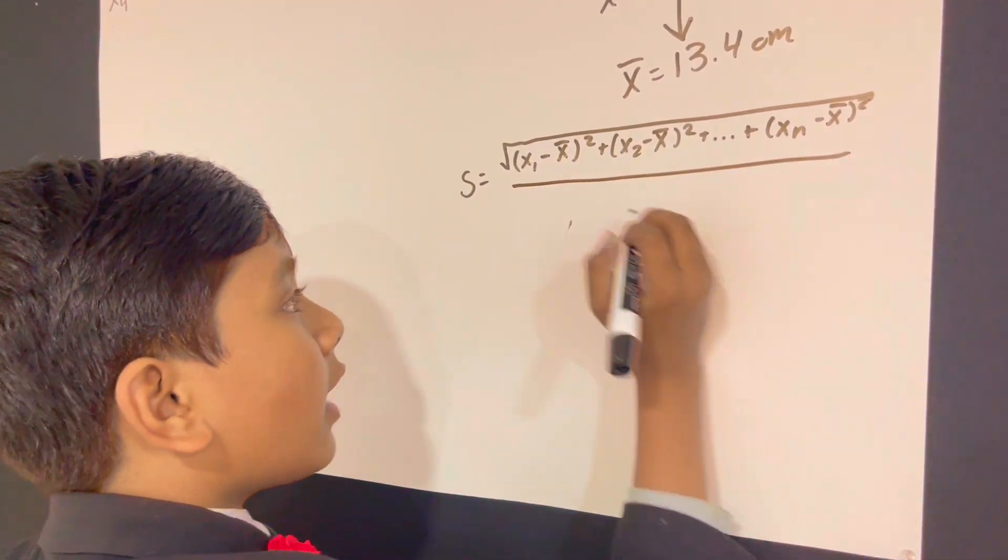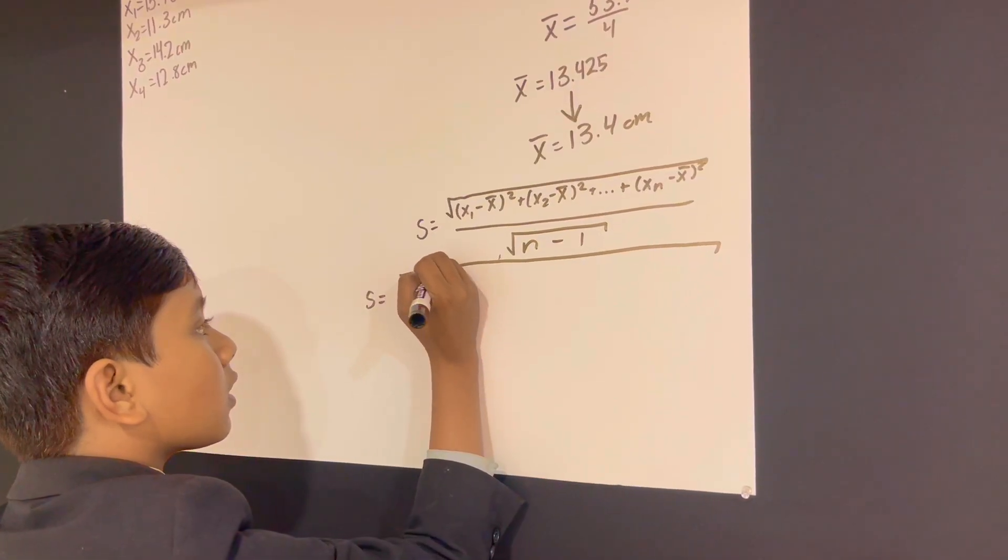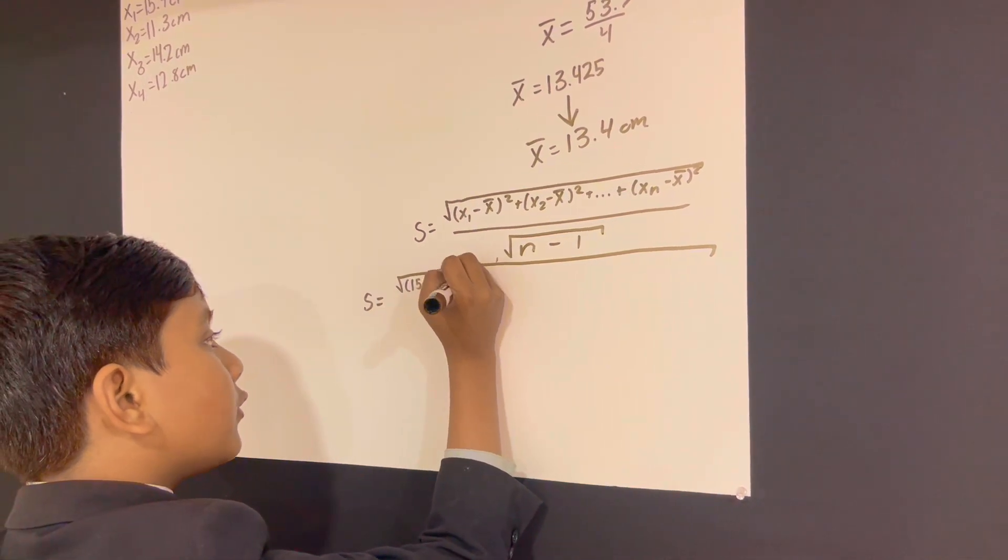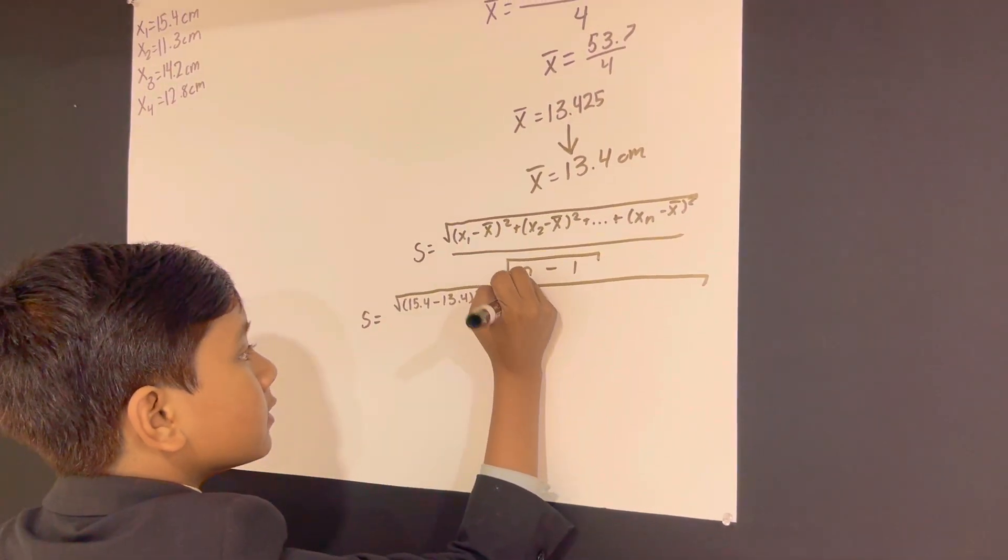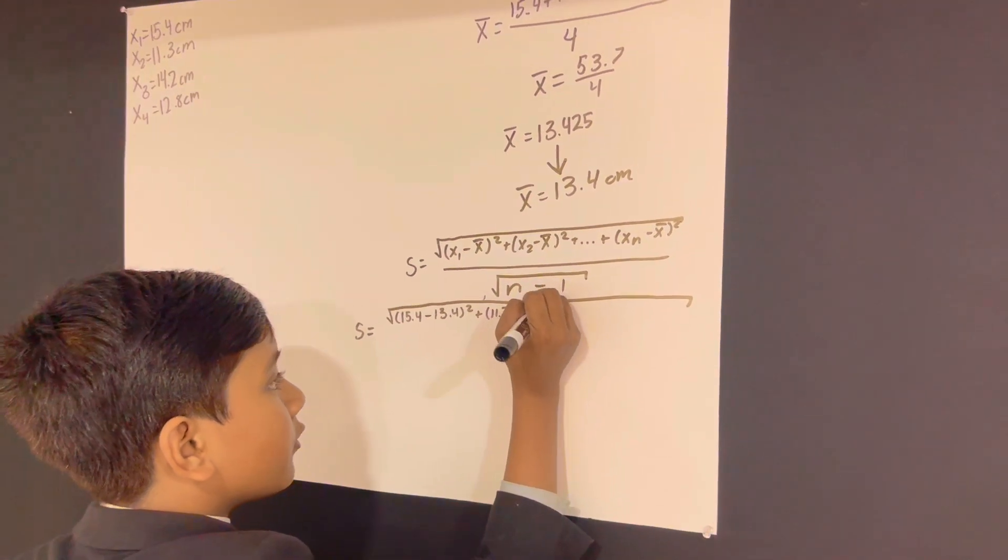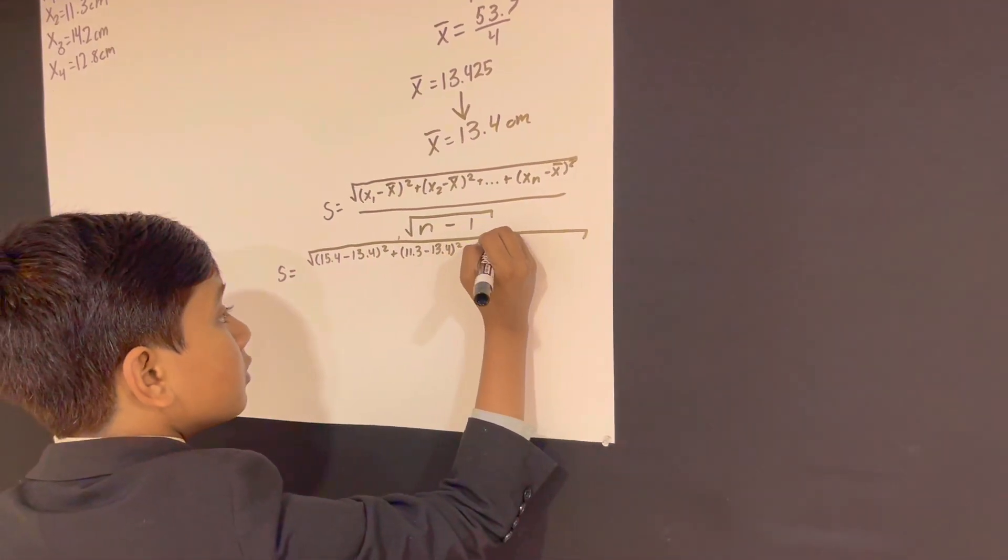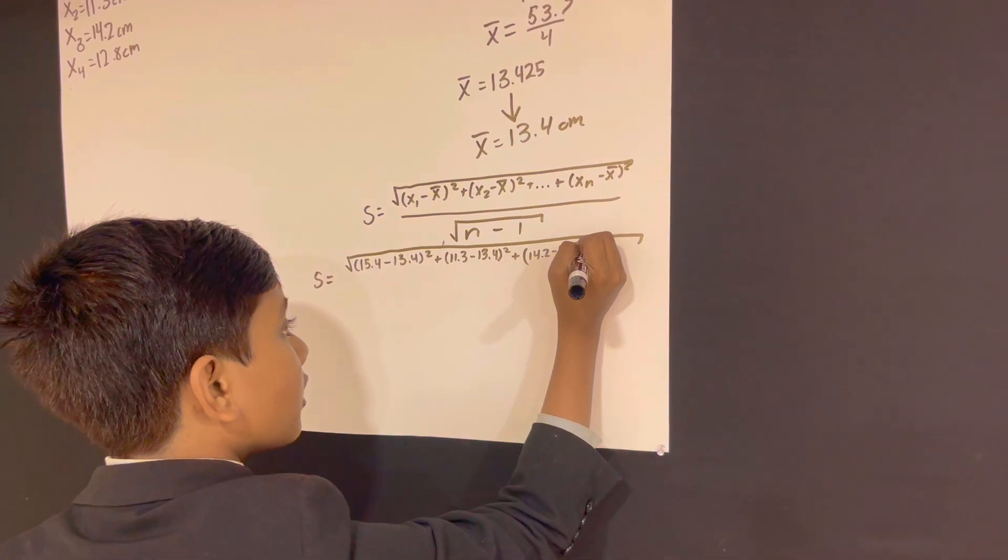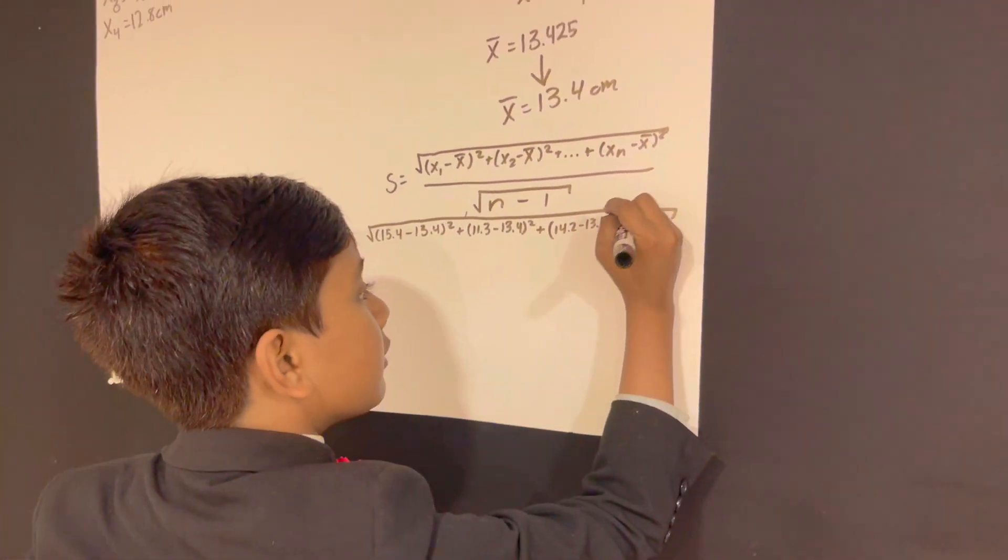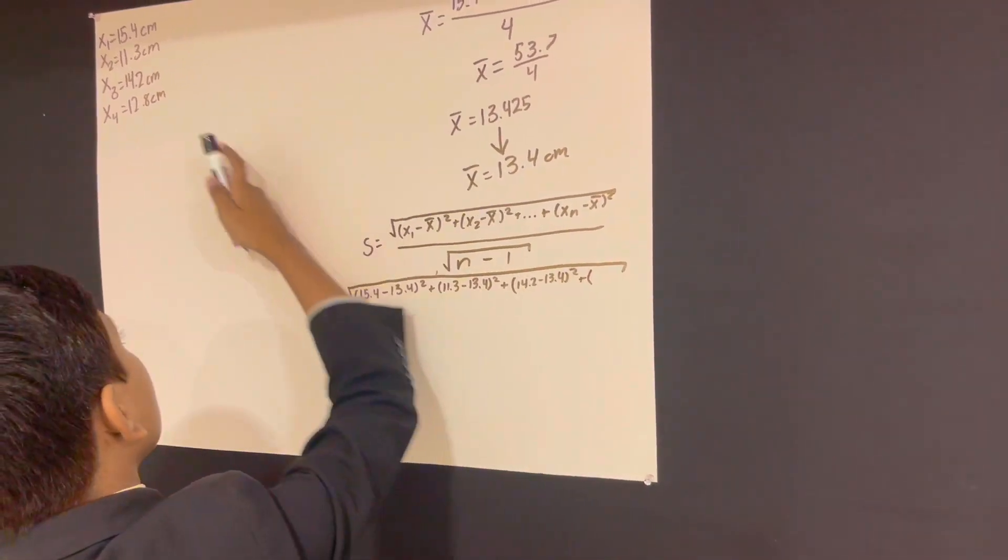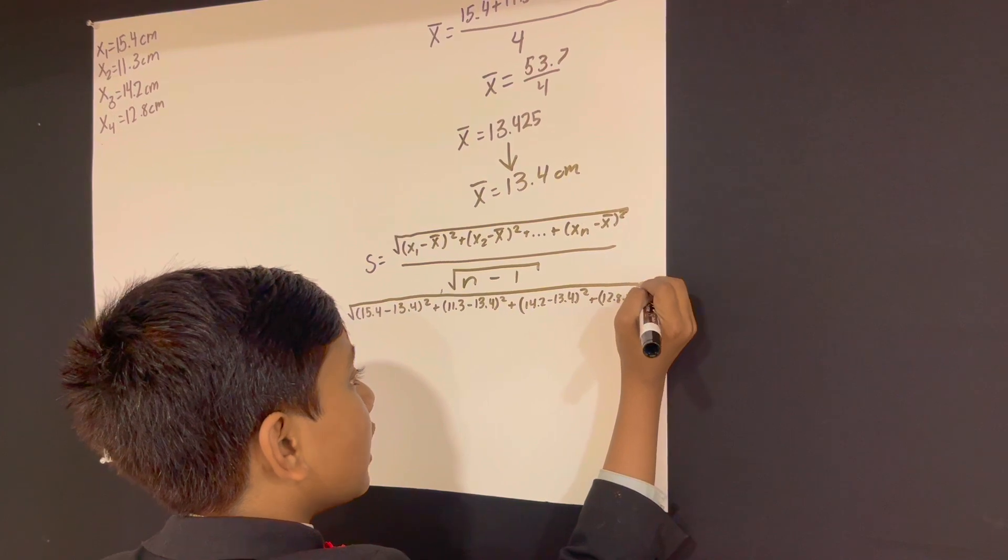Now we're gonna divide that by the square root of x2 minus x bar is 13.4, x2 is 11.3 while x bar is 13.4, x3 is 14.2 and x bar is 13.4. And finally, last but last, we have x4 minus x bar. So 12.8 minus is significantly squished 13.4.